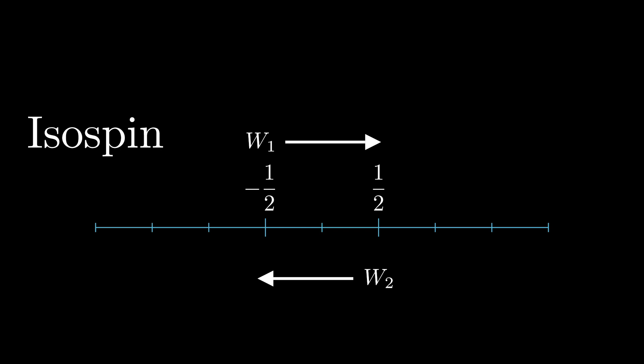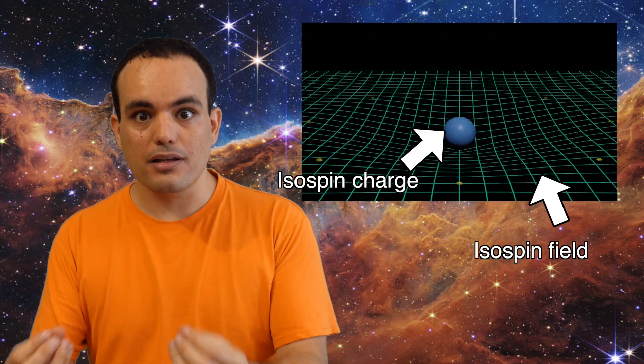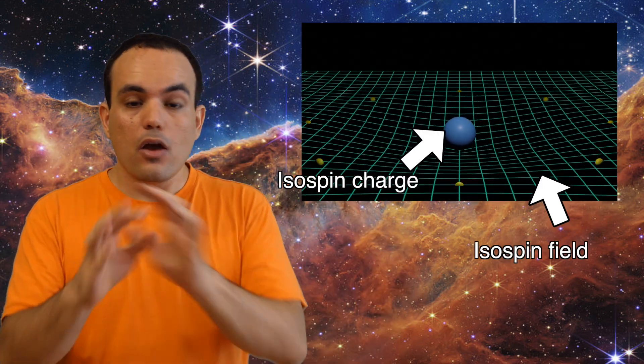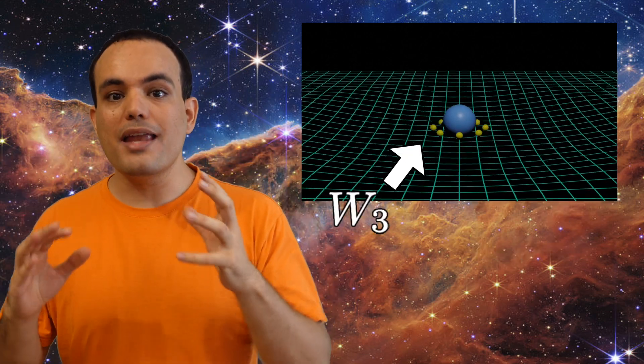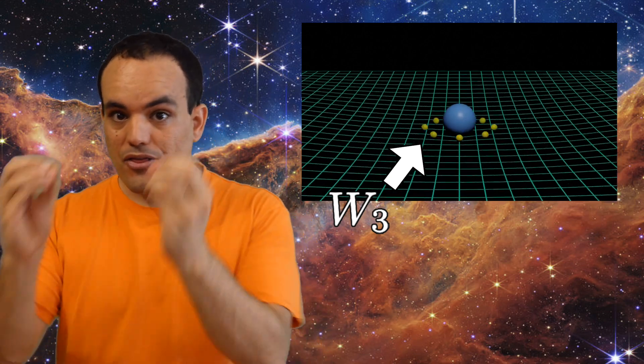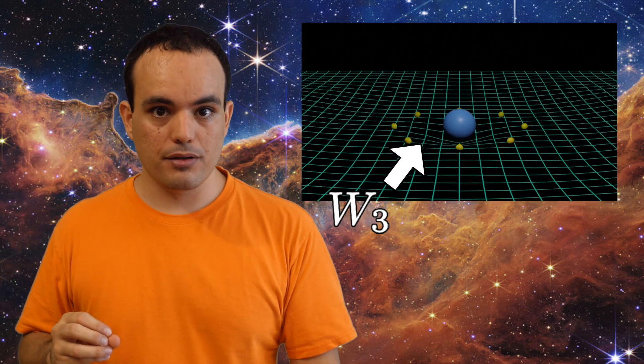Particles could change their isospin by exchanging bosons with an isospin of one or minus one. And these are known as W1 and W2. But it was also possible to create an isospin field and to interact with this field without changing your isospin by exchanging a boson with an isospin of zero. And this is known as W3. The problem is that all of these interactions require a lot of energy. And as the universe expanded and cooled down, particles just didn't have enough energy to interact in any of these ways anymore.